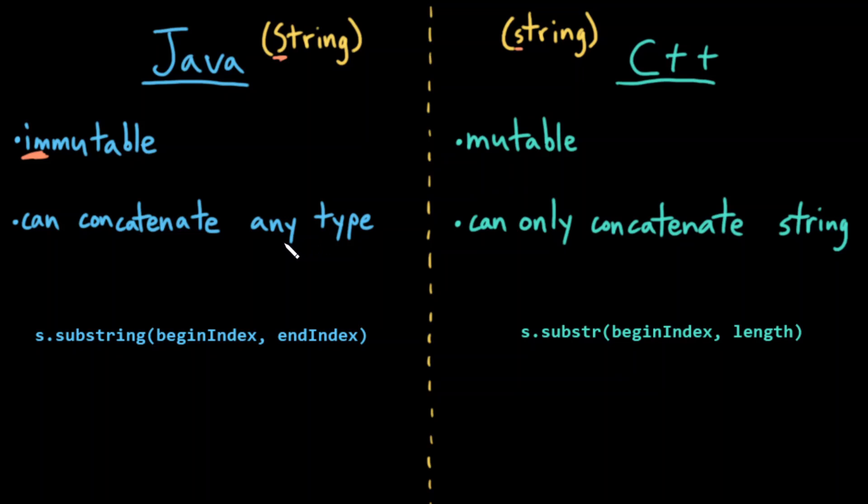In Java, you can concatenate a string to any other type. So I could do my string plus and then an integer, and it'll concatenate the integer to the string and get a string that has both of them together as the result.